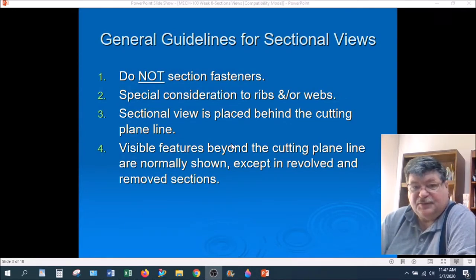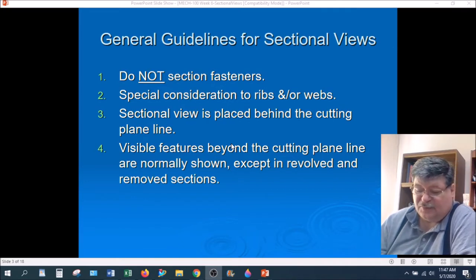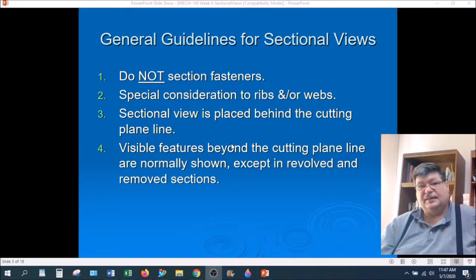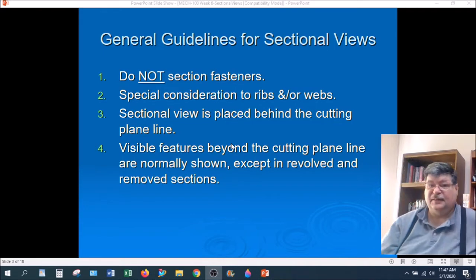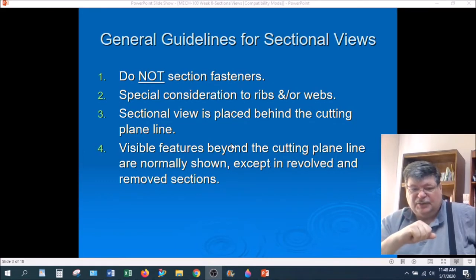More guidelines. Do not section fasteners. A fastener is things like nuts and bolts and screws and rivets and whatever uses to fasten things together. Because not only can we do a sectional view of a part, we can also do a sectional view of a series of parts like stacked together. In which case, a fastener would like bolt two pieces of metal together or something like that. We do not section the fasteners. We typically cut through the hole and cut through the fastener with our cutting plane line. But usually the fastener is very small in relation to the size of the things it's holding together. And there's usually not room to put section lines in a fastener. So we just don't do that.